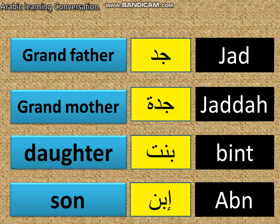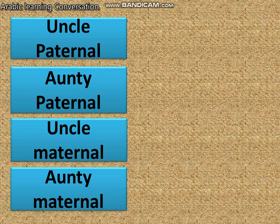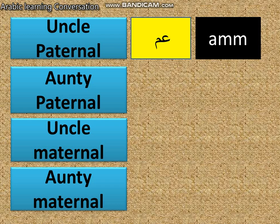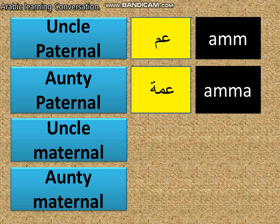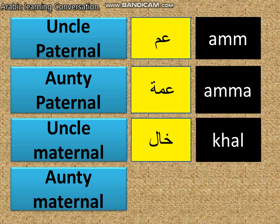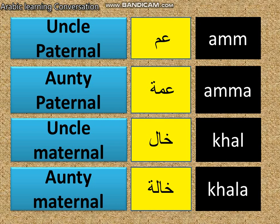Uncle — paternal uncle, meaning uncle from the father's side — is called 'um.' Paternal aunty, meaning auntie from the father's side, is called 'amma.' Uncle maternal, meaning uncle from the mother's side, is called 'hal.'